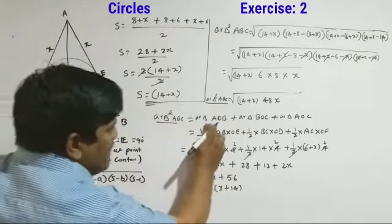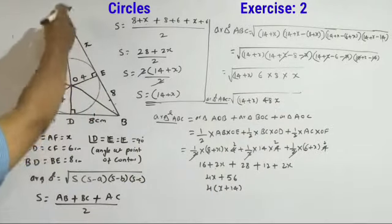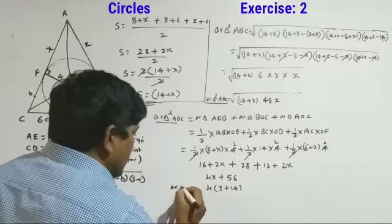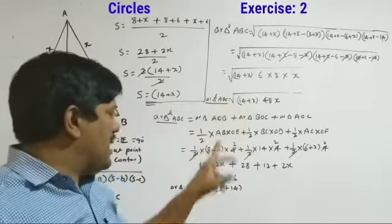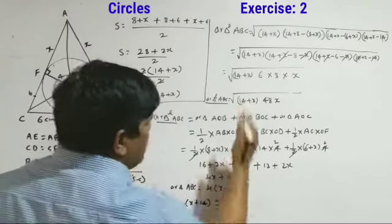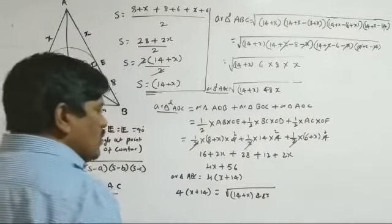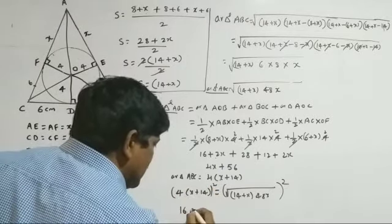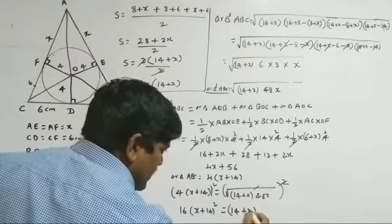Area of triangle ABC equals area of AOB plus BOC plus AOC. So 4(X+14) = √[48X(14+X)]. Squaring both sides: 16(X+14)² = 48X(14+X). The (14+X) terms cancel, giving 16(X+14) = 48X.